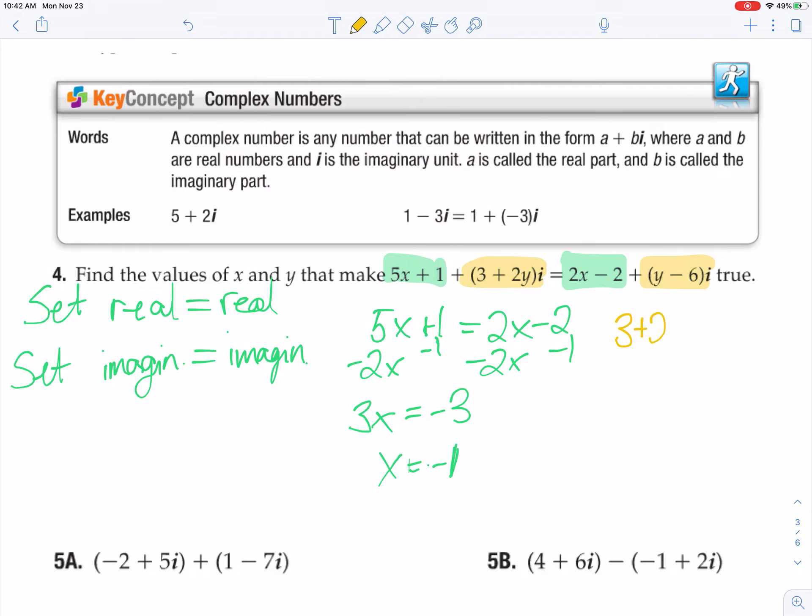And now I'm going to go ahead and do the imaginary part. 3 plus 2y parentheses i equals y minus 6 parentheses i. And so what I notice on the imaginary part is if I divide by i to try and get it to cancel away, it's going to cancel off of both sides. And now I'm just left with plain boring numbers and variables that should be pretty easy to solve. Okay, so y equals negative 9.